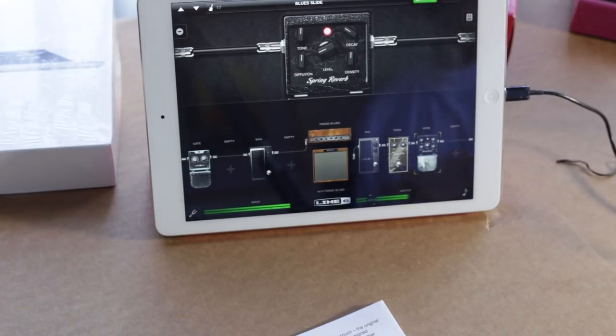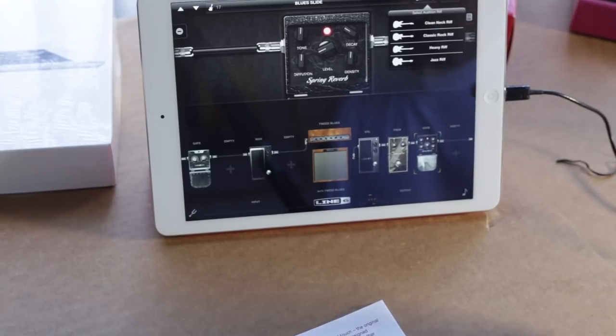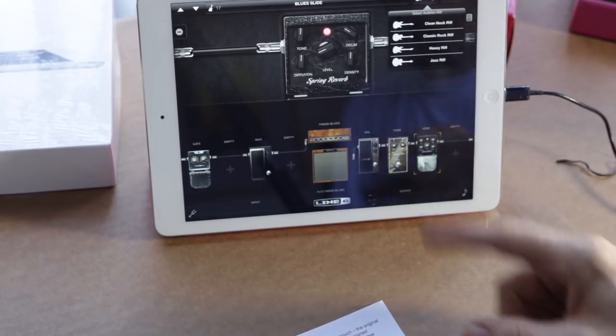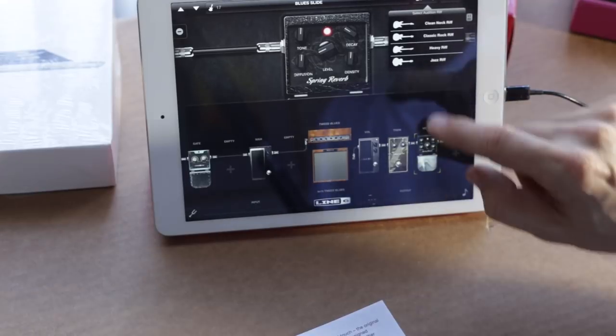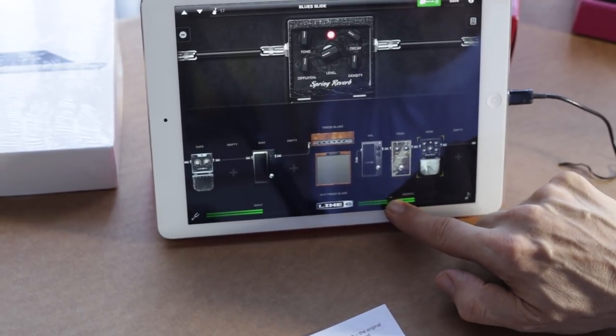All right guys, so here we're in preview mode, and it's a cool function here where you can select the sound, just kind of like preview it, right, to preview what you have here. So let's do that really quick, let's do a clean neck riff and here we're going to bring up the volume.